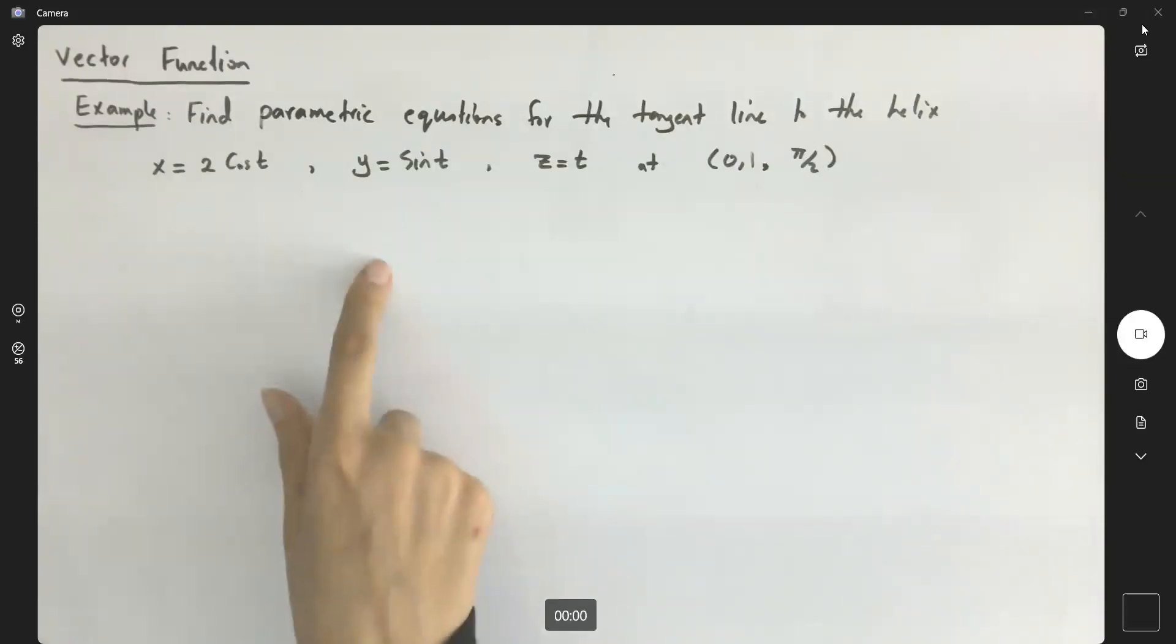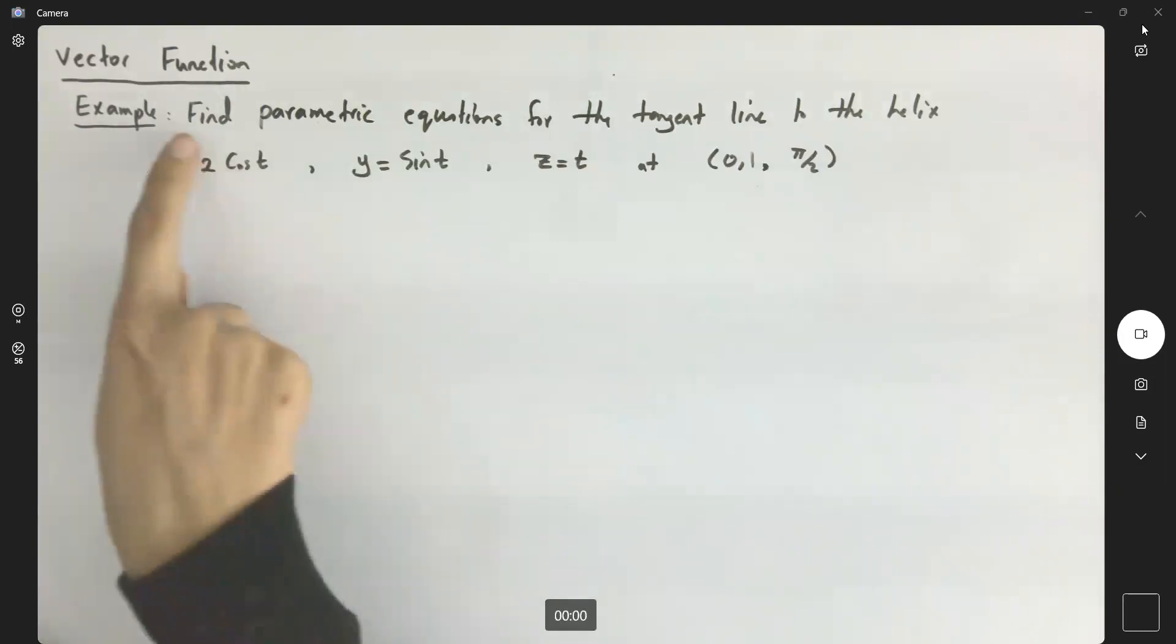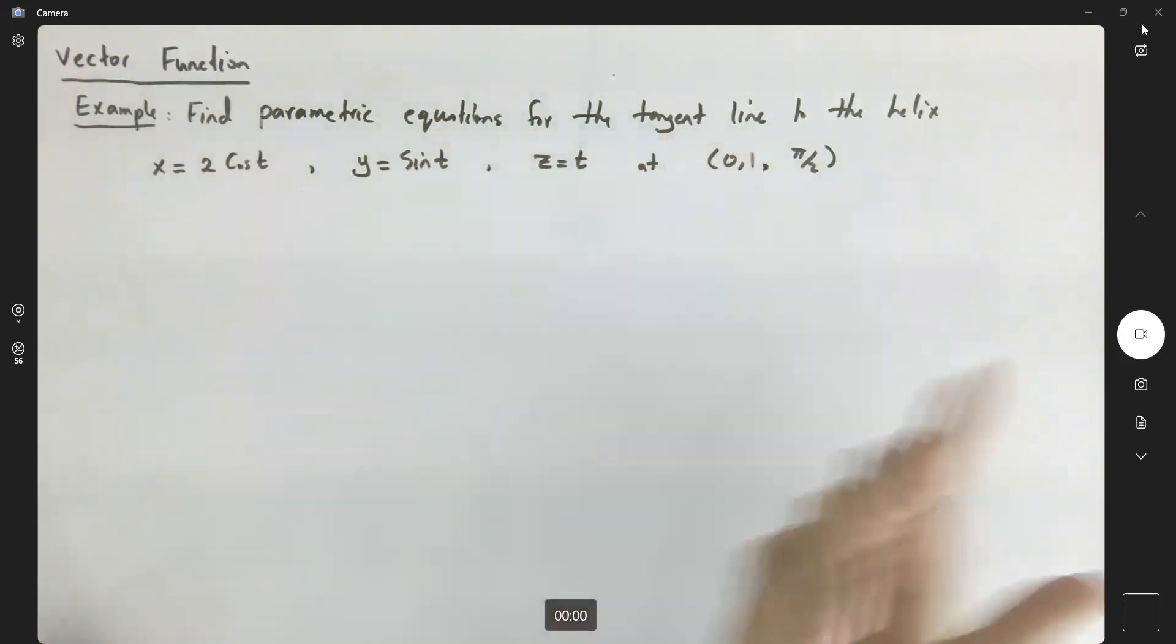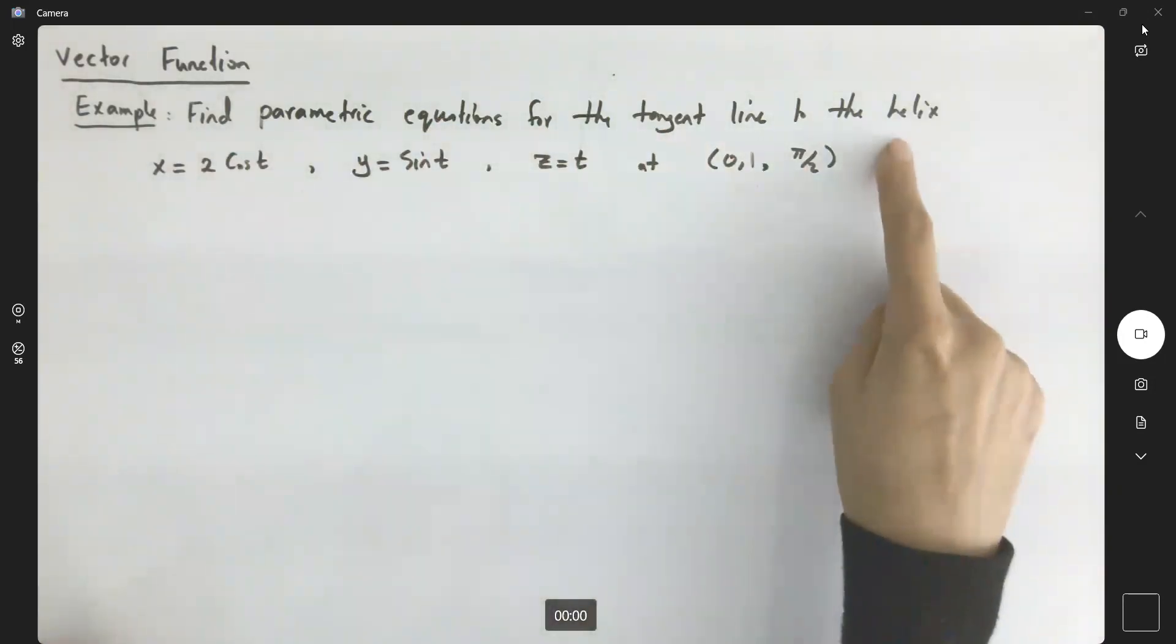Let's take a look at the next example. Now we learn about a tangent vector. We are interested in finding the equation of the tangent line to any curve. In this case, we have a helix.